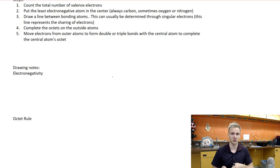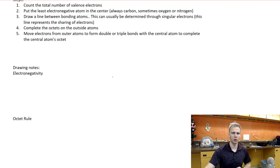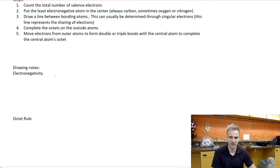In terms of finding the central atom, we're dealing with non-metals and non-metals — either molecular or covalent bonding, those two words mean the same thing. We're dealing with two non-metals that want to bond together. The rule is: it's always going to be carbon, and sometimes oxygen or nitrogen. If we don't have those elements present, let me draw our periodic table here.